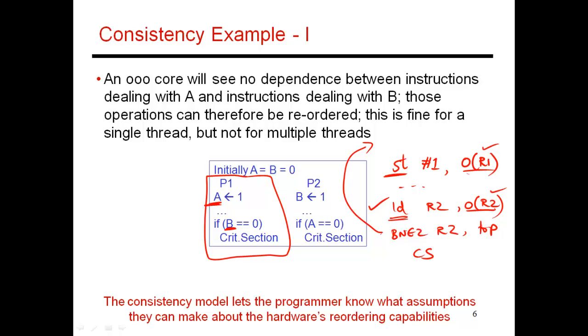The load-store queue is going to issue this load as early as it can. It need not wait until the store reaches the top of the reorder buffer, finishes, and then if you were to issue the load then, you're delaying the load by many hundreds of cycles. In this case, the load-store queue says there is no dependence within this one thread. So it should be perfectly safe to issue the load early. And that's what you do.